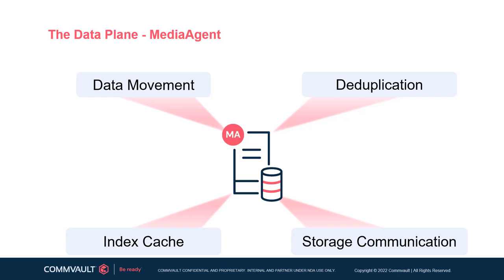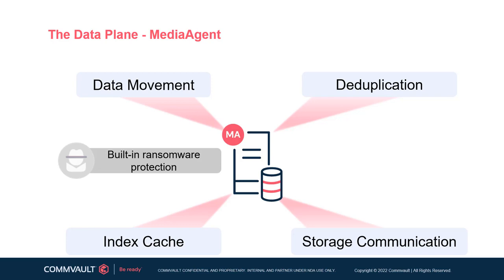The media agent software is supported on most major operating systems, features ransomware protection, and can be installed on physical servers, virtual machines, and public cloud instances. Commvault provides increased efficiency and cost reductions through cloud media agent power management and the optimization of cloud storage tiers. The power management feature automatically turns a media agent on when required and off after the operation is complete, while the latter optimizes cloud storage to minimize read charges at the cool and cold storage tier levels.